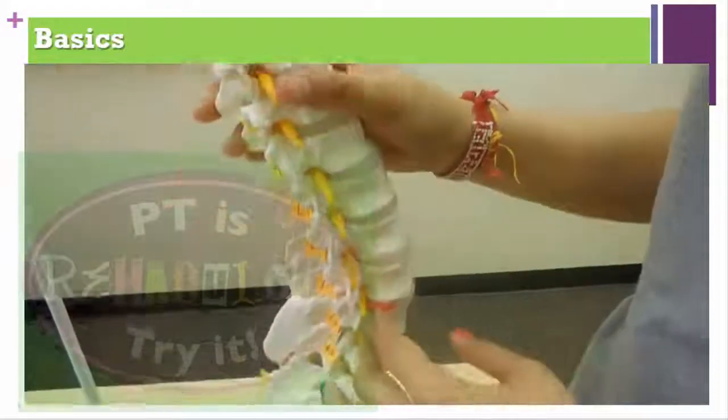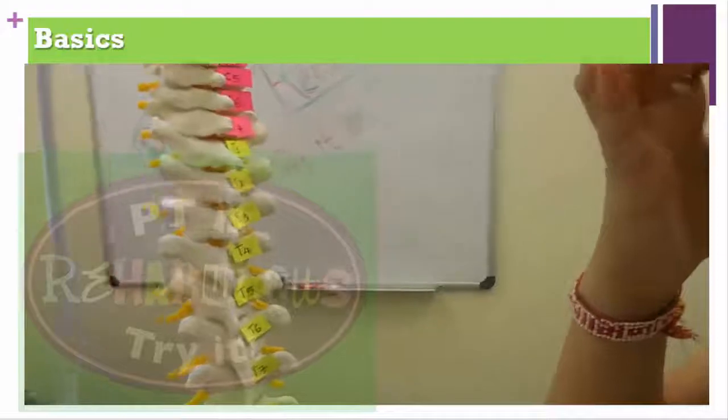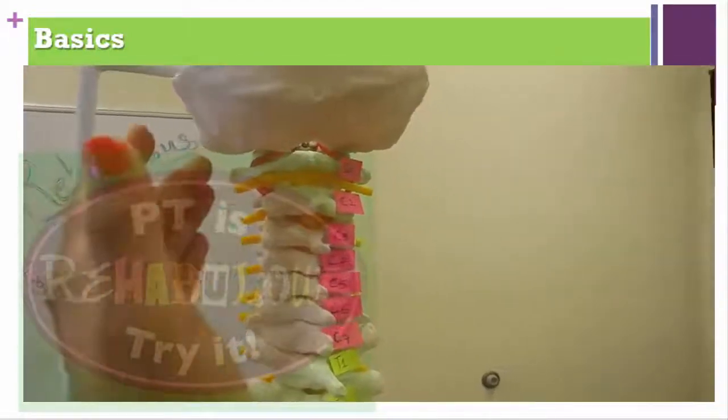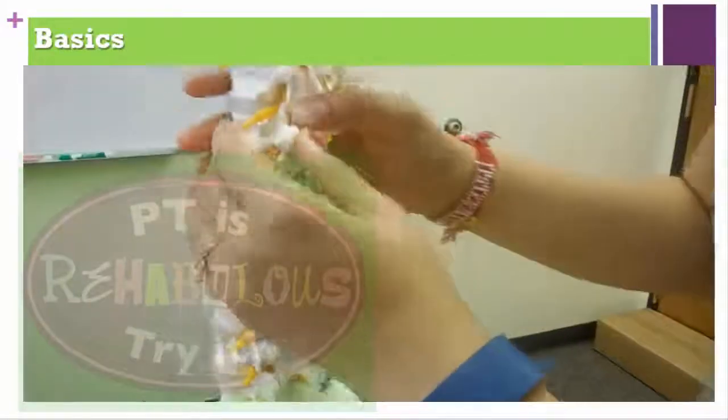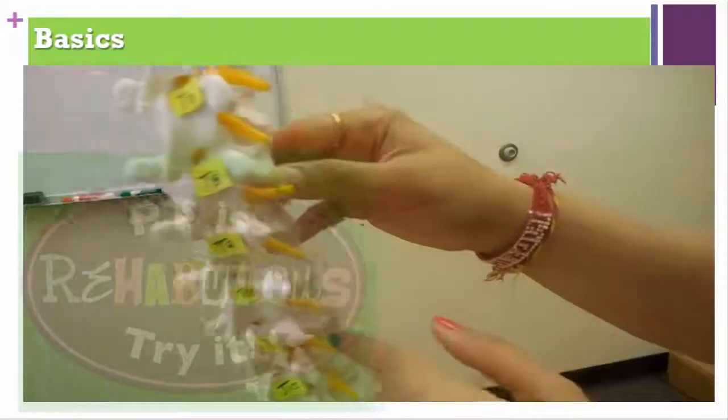From the anterior view you can see the intervertebral discs — for cervical, thoracic, and lumbar regions. You can also see nerve roots exiting, including a slightly herniated disc, and the pelvis. An important point: for the cervical spine, the nerve root exits above the corresponding vertebra, whereas for the thoracic and lumbar spine, the nerve root exits below the corresponding vertebra.